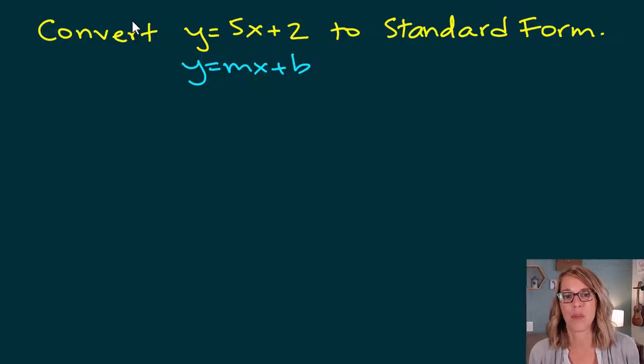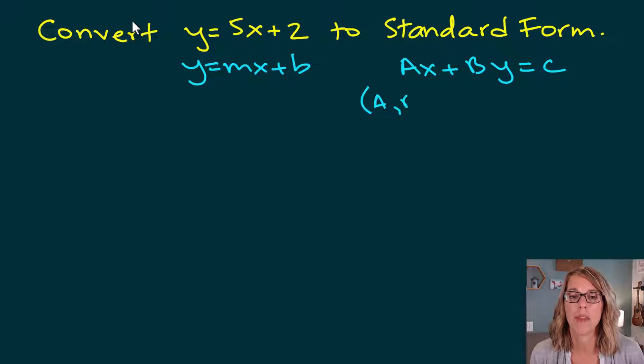Standard form has all of our variable terms on one side. So it's going to be capital A x plus capital B y equals c. It's also important that a, b, and c are all integers. So this means that there are no fractions and no decimals.